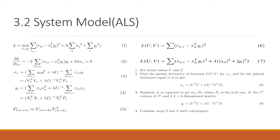The calculation process is as follows. Set initial values V and U. Find the partial derivative of function L for X. And let the partial derivative equal to zero to get X. Similarly, it is expected to get equation 9. Continue steps 2 and 3 until convergence.